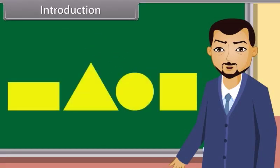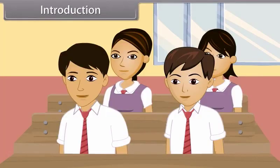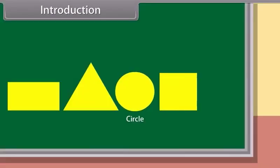I will draw some shapes on the blackboard. You have to tell me their names. This is a circle. And this is a rectangle. This is a triangle. And this is a square, sir.